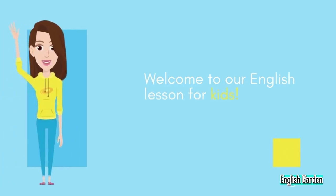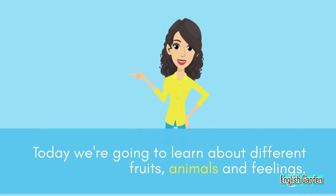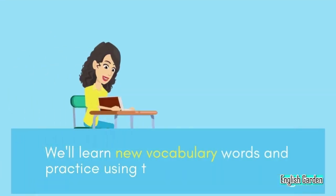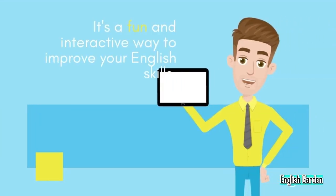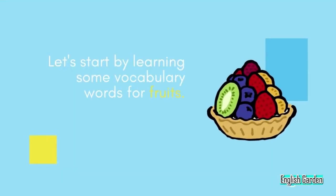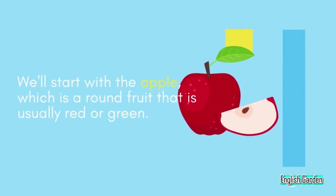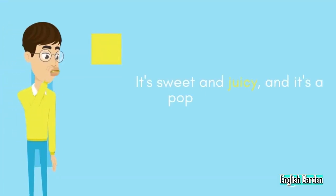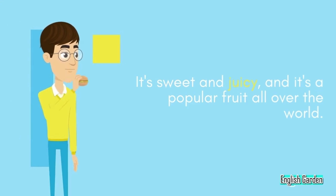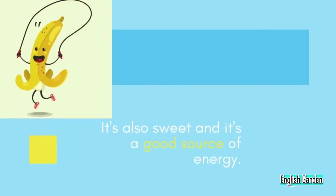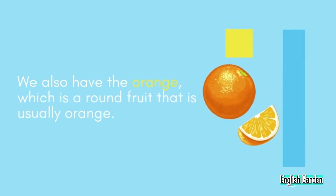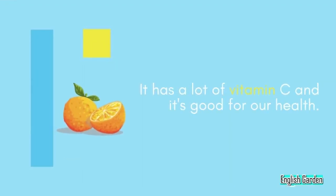Welcome to our English lesson for kids. Today we're going to learn about different fruits, animals, and feelings. We'll learn new vocabulary words and practice using them in sentences. Let's start with fruits. The apple is a round fruit that is usually red or green — it's sweet and juicy and a popular fruit all over the world. The banana is a long curved fruit that is usually yellow, and it's a good source of energy. The orange is a round fruit that is usually orange, and it has a lot of vitamin C.